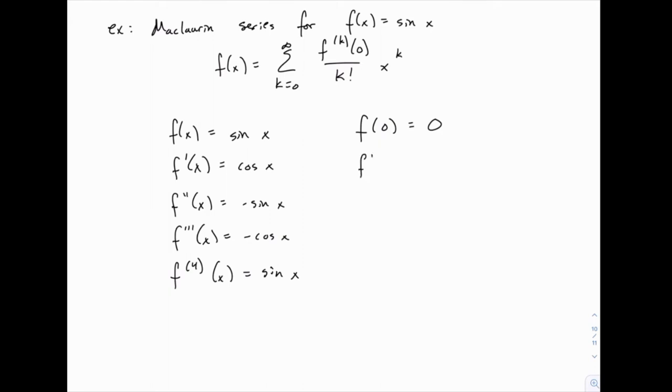If we plug in 0 to all of these derivatives, we get 1 for the first derivative, 0 for the second derivative, negative 1 for the third derivative, and back to 0 for the fourth derivative. If we kept going, we would get 1, 0, negative 1, 0, 1, 0, negative 1, 0, and that just loops over and over and over again. So again, the pattern is very clear.